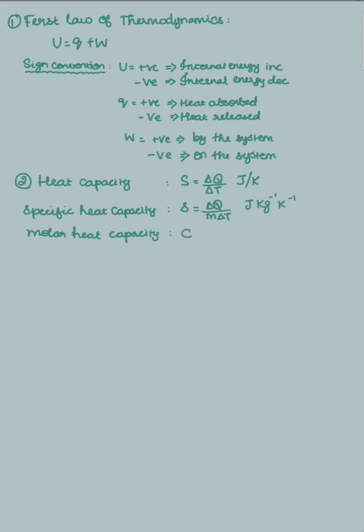Molar specific heat capacity is the amount of heat required to raise the temperature of 1 mole of a substance by 1 degree Kelvin. Here μ indicates moles, and the unit will be Joule per mole per Kelvin.